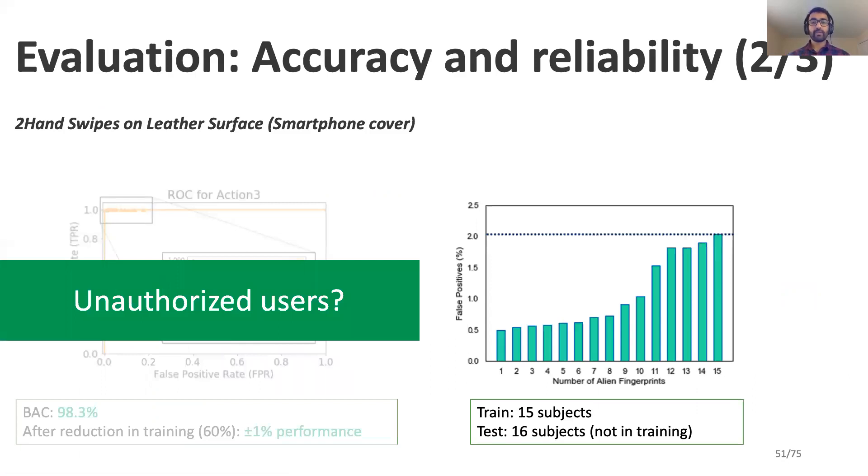To ensure that SonicPrint can also identify unauthorized users, we train our model on 15 subjects and test it on 16 subjects which are not included in the training process. Even increasing the unknown fingerprints to 15, we observed only a 2% false positive rate which is far better than some previous biometric technologies.